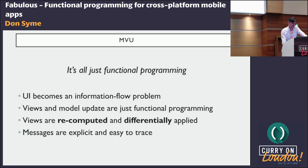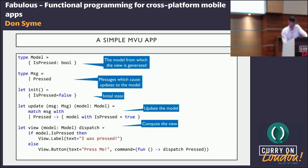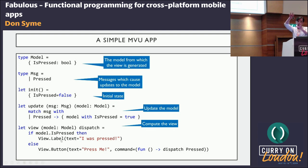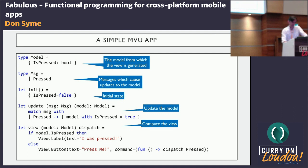One great thing about this is not only all the usual benefits of functional programming, but it's a joy to unit test as well. You can unit test the update function separately. You can unit test the view function. You can pass in a mock dispatch function to capture and intercept messages, check that the view responds correctly, evaluate the view, and run queries to say 'if we're in a particular state, I expect there to be a login button.' You can examine the actual logical view elements that are created.